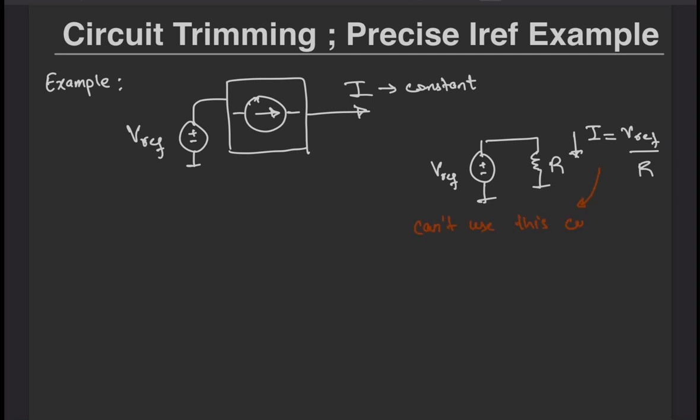However, in order to copy that current and also to not disturb the reference voltage by sucking current from it, what we can do about it is to employ negative feedback to mirror that voltage onto a resistor and then use another transistor to source the required current. This will keep the reference voltage isolated so as to not disturb its value.